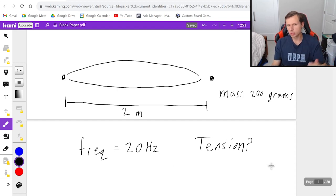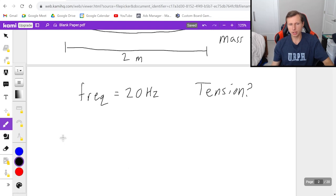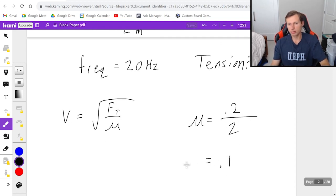So you can start in one of two places. For instance, you can start with the equation v equals square root of F_T over μ, where μ is the linear mass density, which is mass, 0.2 kilograms, over the length, two meters, looks like we're going to get 0.1 for our Greek letter μ. But the problem is I don't know the velocity, so I can't actually solve for the tension yet.